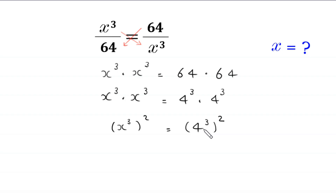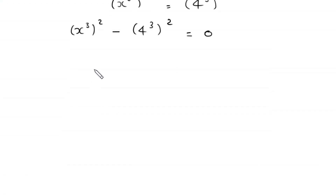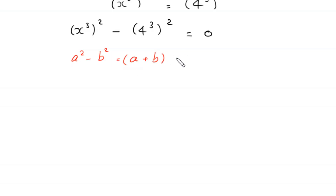This simplifies to (x³)² equals (4³)². Moving the right side over, we get (x³)² minus (4³)² is equal to 0. Now we have a difference of two squares, so we use the algebraic identity a squared minus b squared is equal to a plus b times a minus b.